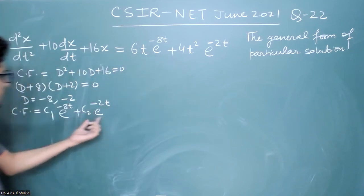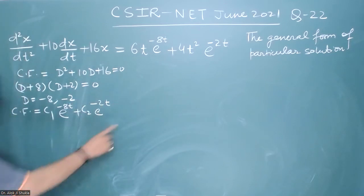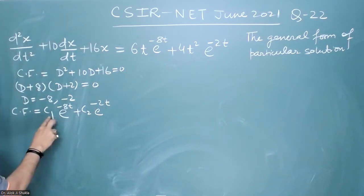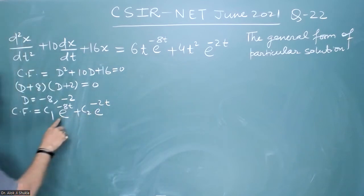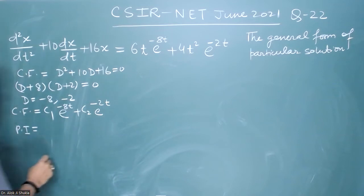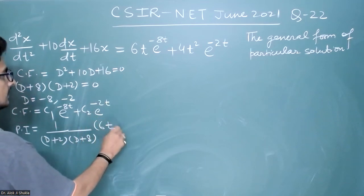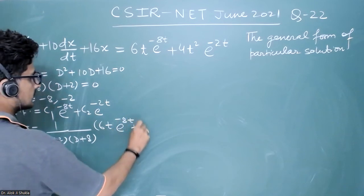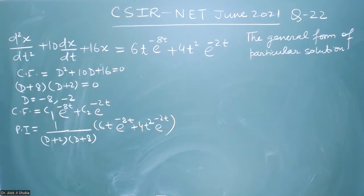Anything in the particular integral, if we get as some constant times e^(−8t), that will be accommodated in c₁, and if we get something like constant times e^(−2t) that will be accommodated in c₂. So the particular integral will be free from such terms. The particular integral will be given by 1/[(D+2)(D+8)] acting on [6t·e^(−8t) + 4t²·e^(−2t)]. This I will prefer to write as partial fractions.